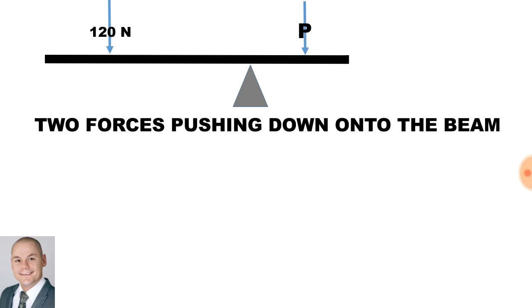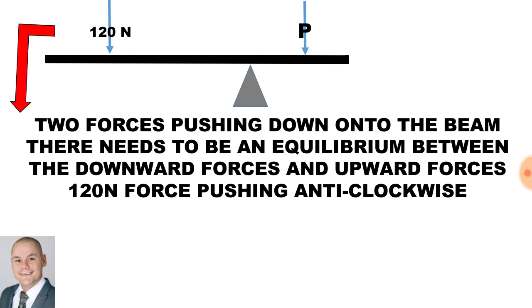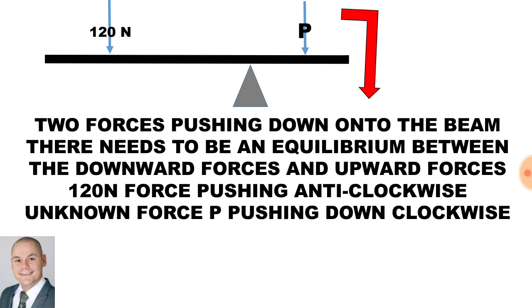Two forces pushing down onto the beam, there needs to be an equilibrium between the downward forces and the upward forces. The 120 N force is pushing in an anti-clockwise direction, and the unknown force P is pushing in a downward or clockwise direction.